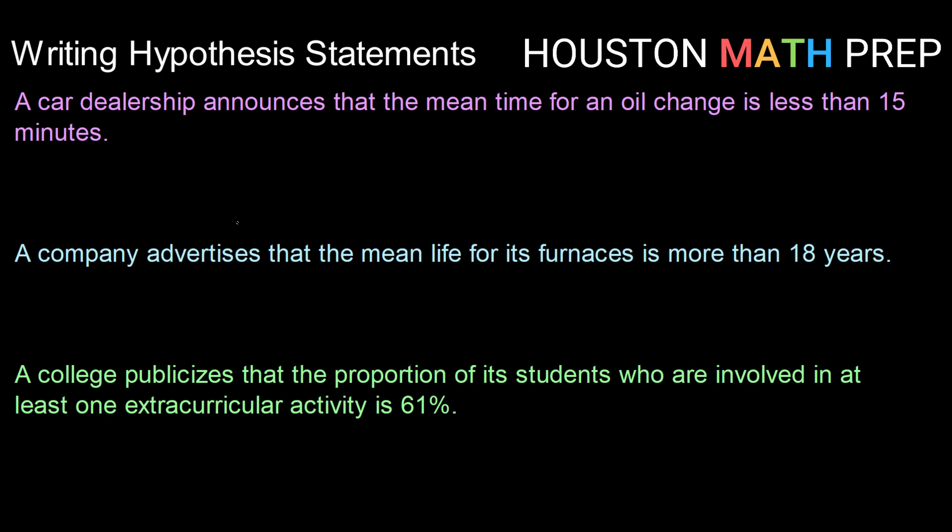So let's say a car dealership announces that the mean time for an oil change is less than 15 minutes. So we're going to set up a pair of hypothesis statements. We're going to have our null hypothesis and our alternative hypothesis. In this case, the parameter that we're talking about is a mean, so I'm going to use the symbol mu for both of them.